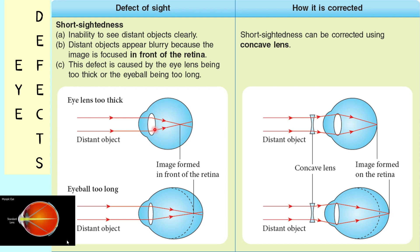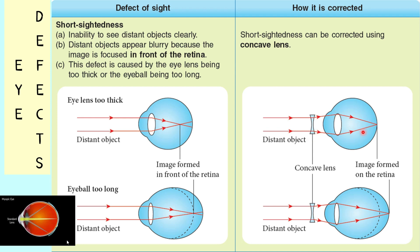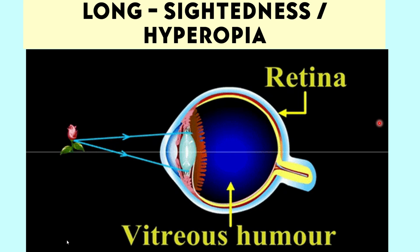This is because the eye lenses are too thick or the eyeball is too long. If the eye lens is too thick, the light from a distant object is focused in front of the retina. As you can see in the image below, a normal size of eyeballs enables the image to be focused exactly on the retina. But if the eyeball is too long, the image is formed in front of the retina. Short-sightedness can be corrected by wearing glasses with concave lenses to diverge the light before it enters the eyes, so the light can be focused exactly on the retina.